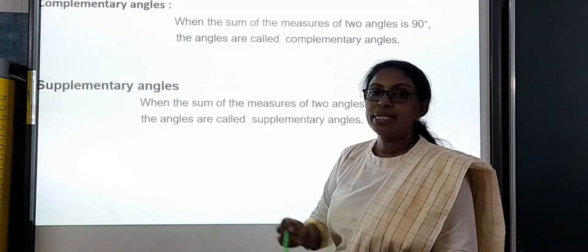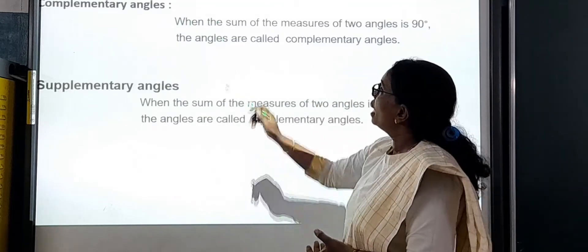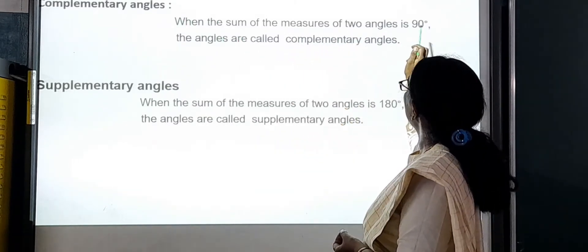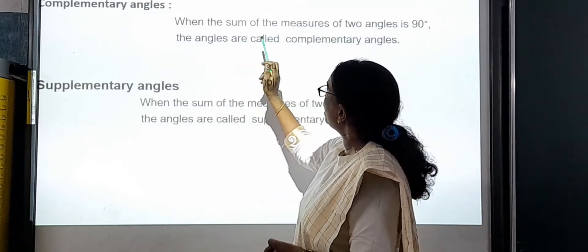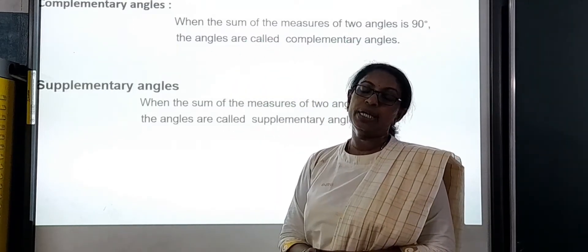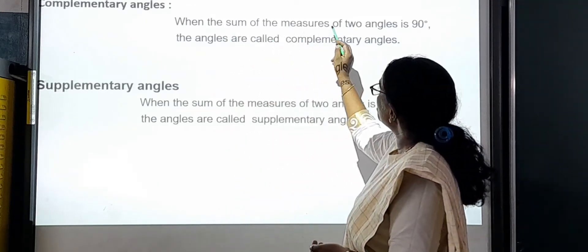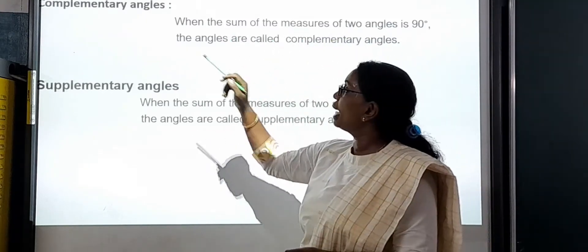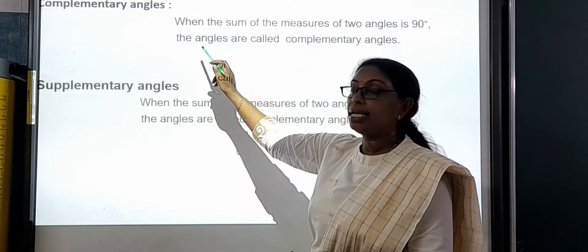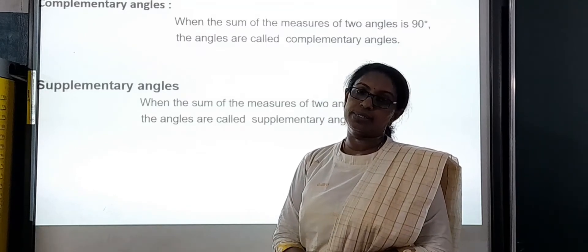And next one is the complementary angles. When the sum of the measures of two angles is 90 degrees, the angles are called complementary angles.